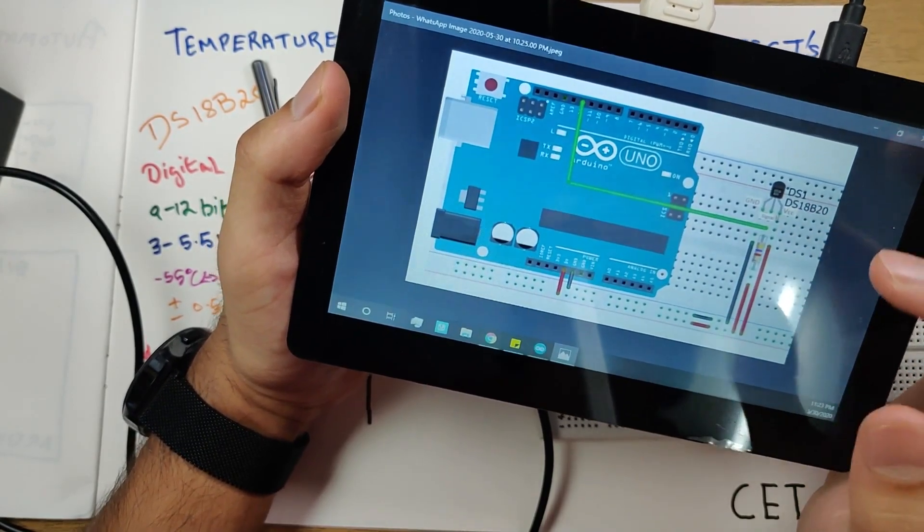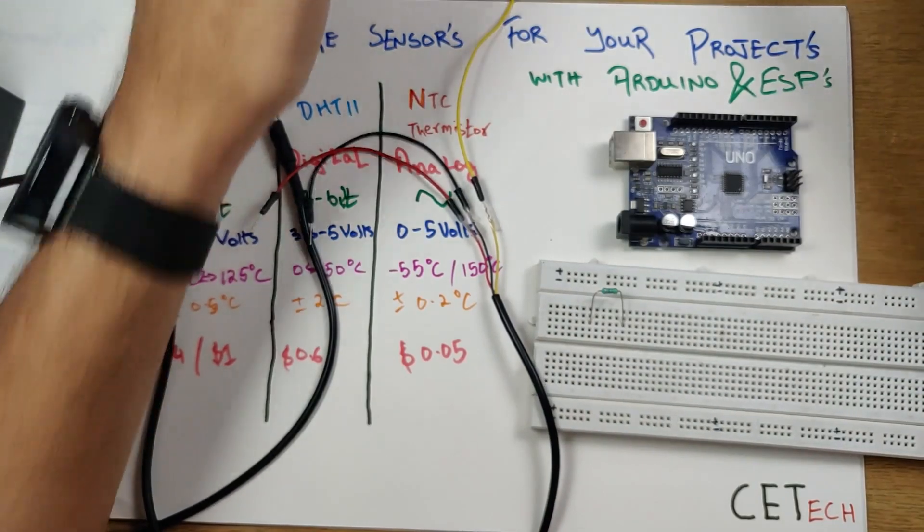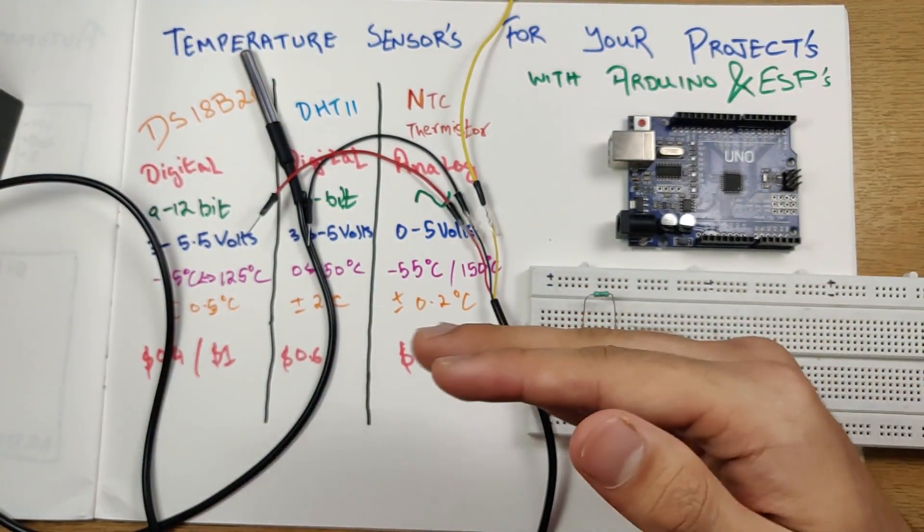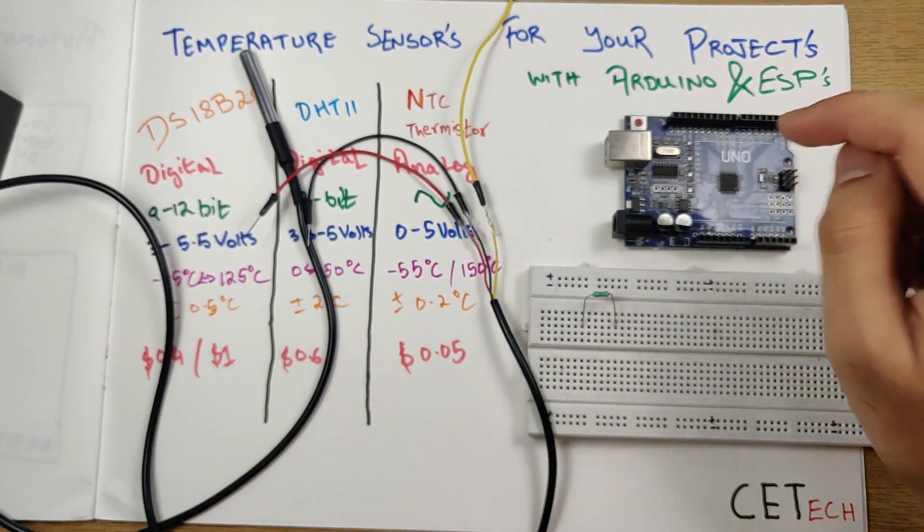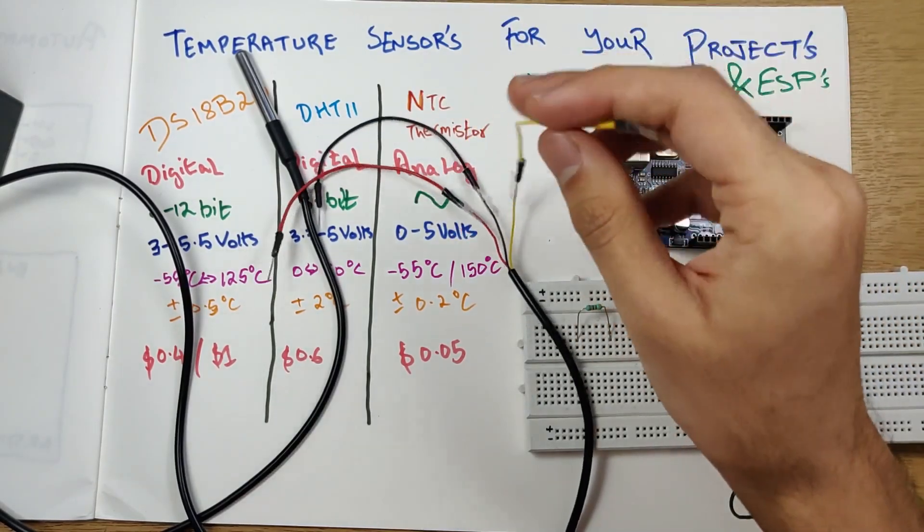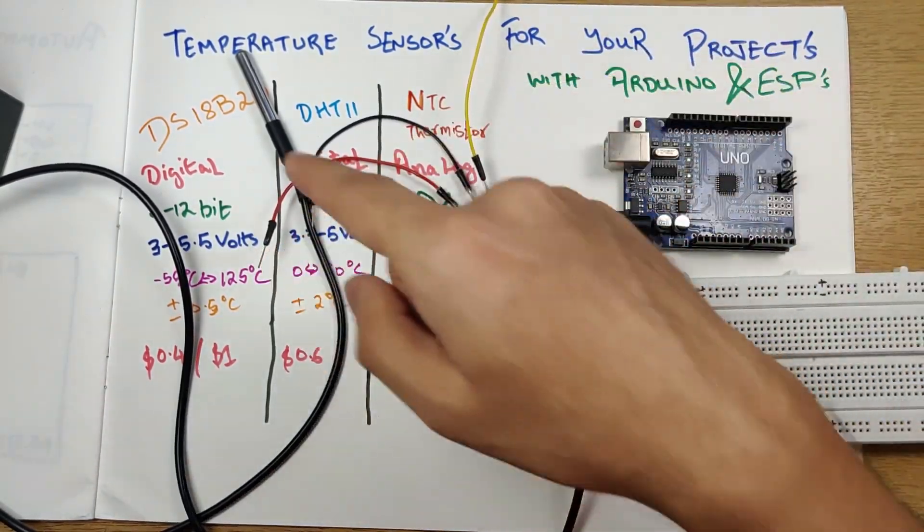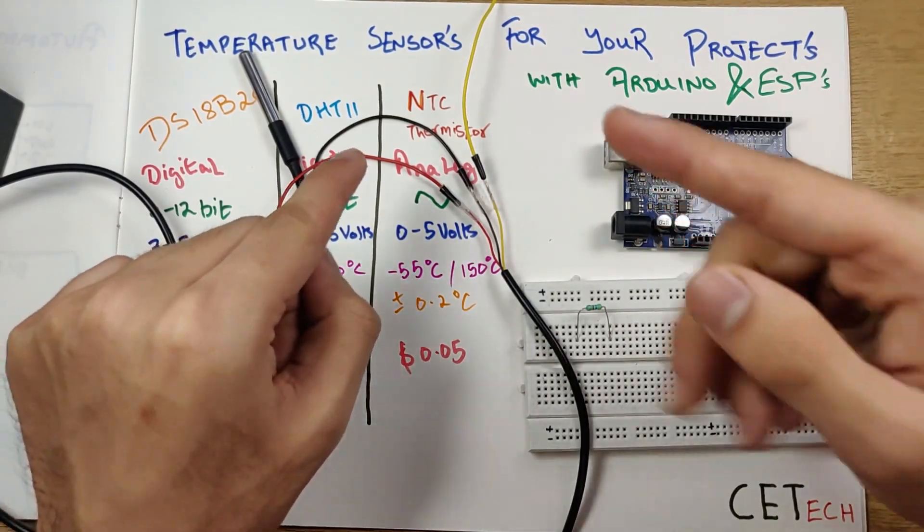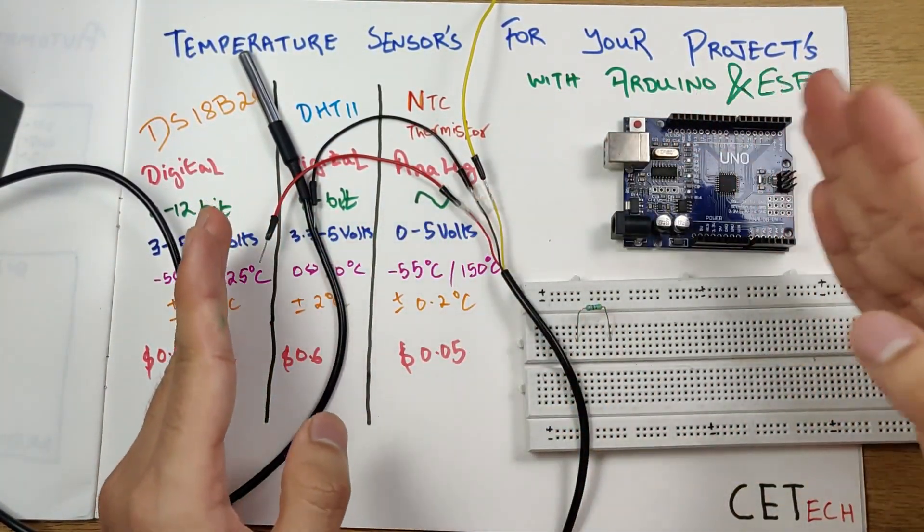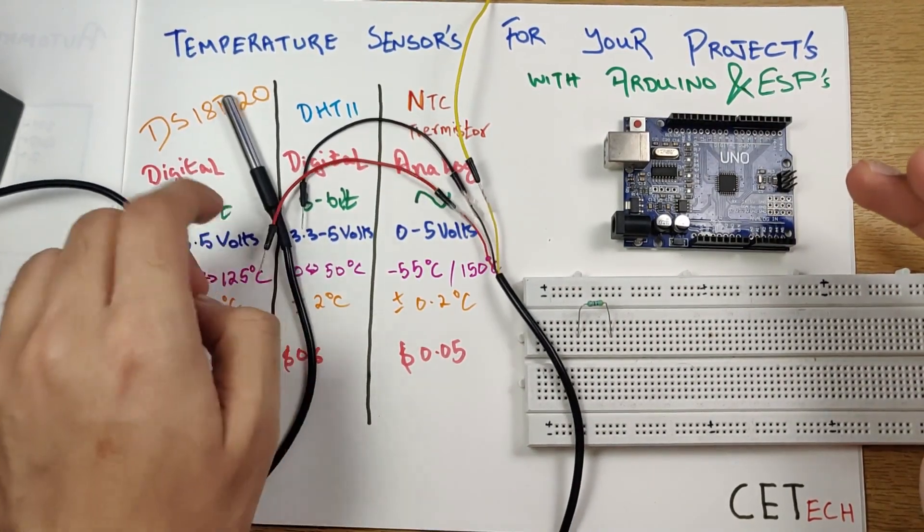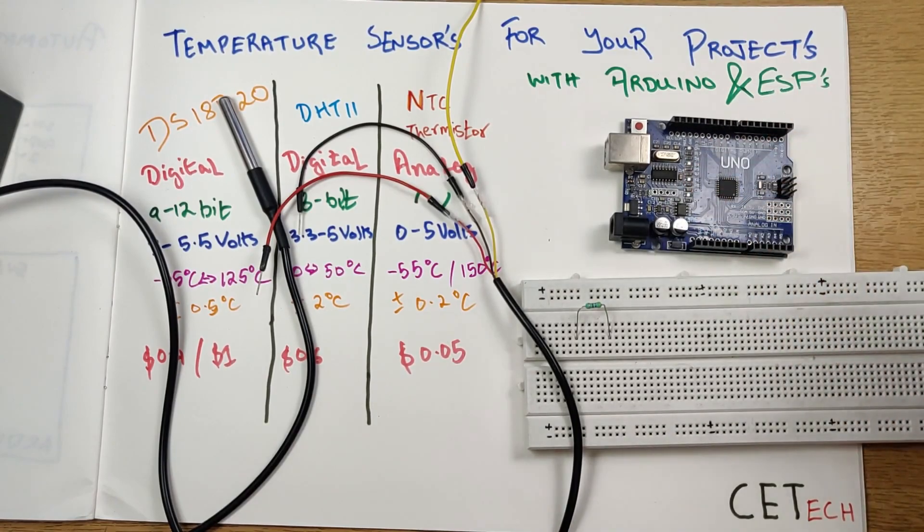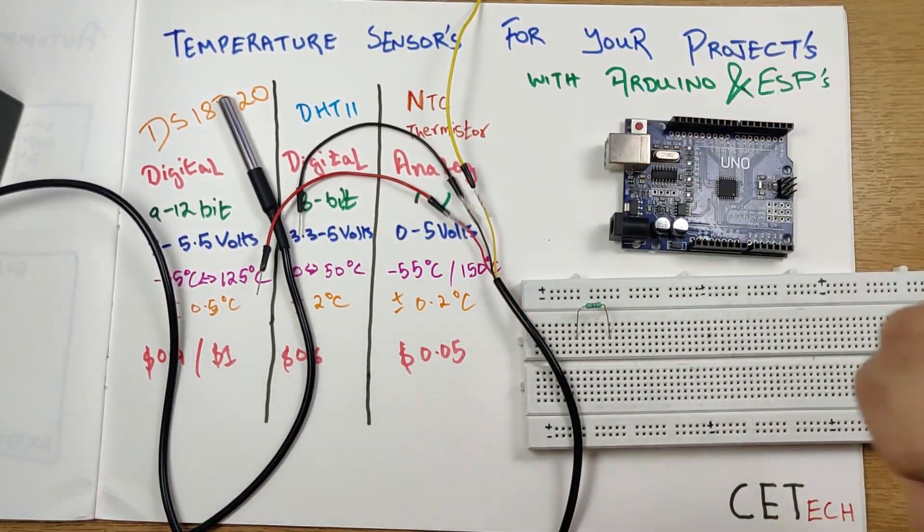Another interesting fact about the DS18B20 is that you can interface multiple DS18B20 to a single microcontroller. Because it is a single-wire thing, you can look at the address of the particular DS18B20 and check the temperature at that address. So you can use multiple DS18B20s with your Arduino or your ESP. I'll put relevant links for that in the description below and not talk about it today in this video.